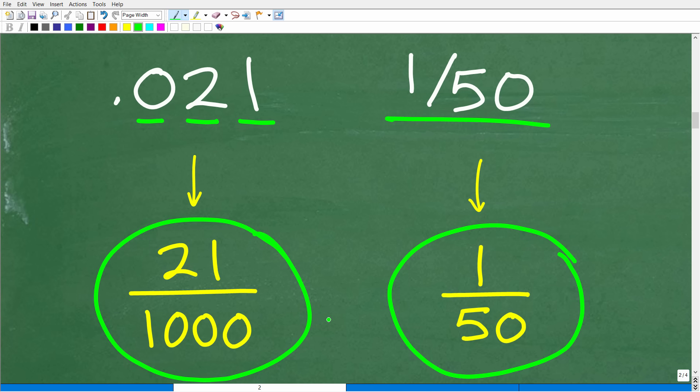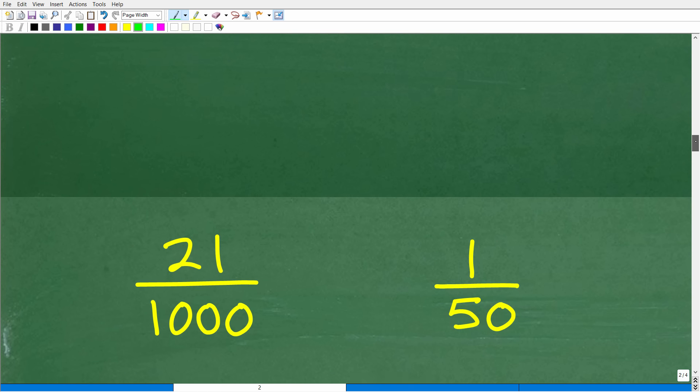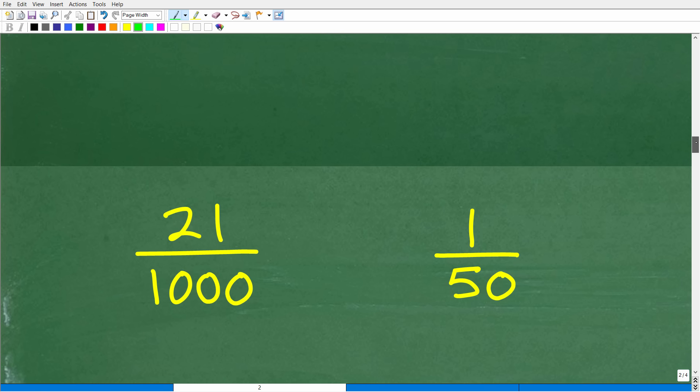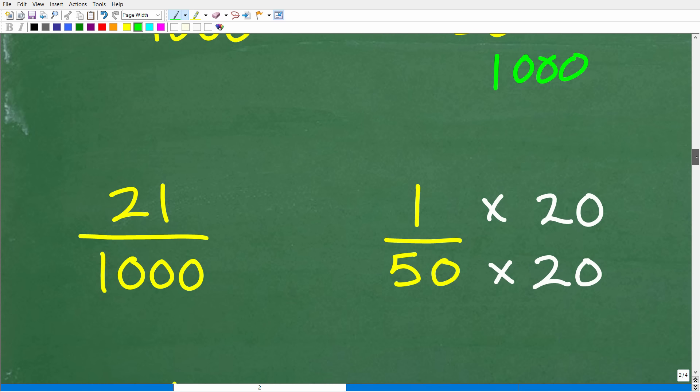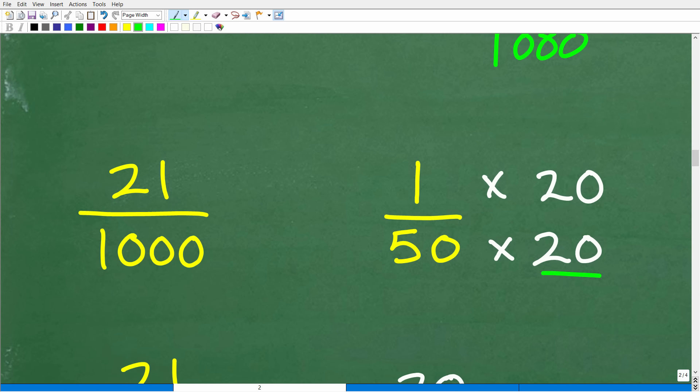But we can't really compare these two fractions because they have different denominators. But we can fix that up, and this is not going to be that difficult. So how can we get these two numbers to have the same denominators? Well, this is 1,000. Now I could try to reduce this fraction down to 50, but I have 21 as my numerator. That's probably not going to work. What's going to be easier is to turn this 50 into a 1,000. So how do I turn a 50 into 1,000? Well, that is not that difficult. All we have to do is multiply it by 20. So 20 times 50 is 1,000. But if we multiply the denominator by 20, we also have to multiply the numerator by 20 as well. So 20 times 1 is going to be 20. So this is going to be 20 over 1,000.